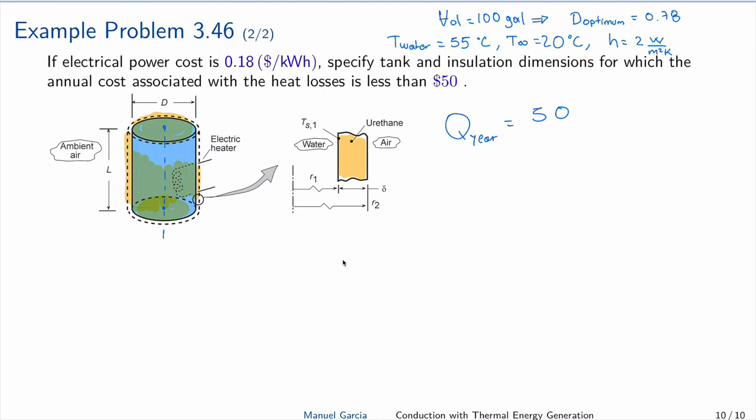If the total heat in a year will be the equivalent of this $50, we need to divide by the price of the kilowatt hour. So 50 divided by 0.18 dollars per kilowatt hour equals 278 kilowatt hours.